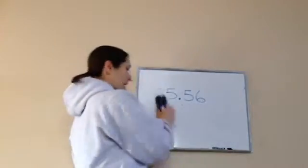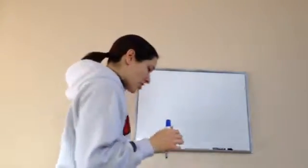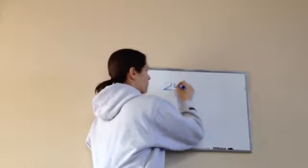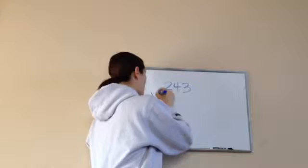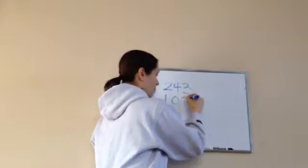Fifth grade, lesson 56, and this is on multiplying by three-digit numbers that include zero. So it takes it up just a notch. So I want you to write down this problem, 243 times, and this time we're going to do 102.